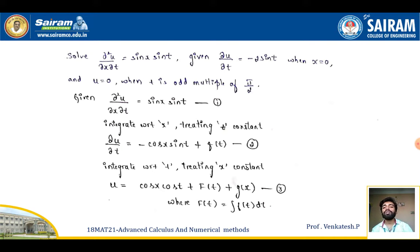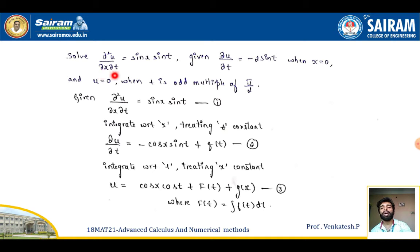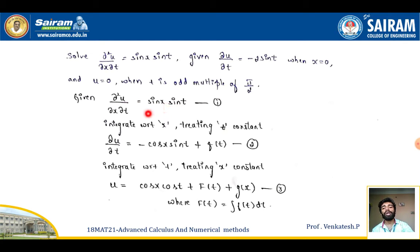One more example: solve ∂²u/∂x∂t = sinx·sint, given ∂u/∂t = −2sint when x = 0, and u = 0 when t is an odd multiple of π/2. We use these conditions to simplify the arbitrary functions. To eliminate ∂/∂x, I am going to integrate with respect to x.